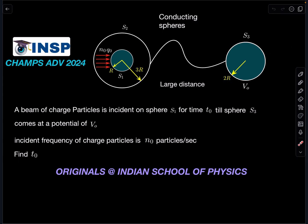A beam of charged particles is incident on sphere S1 for time t₀. Due to the process of electrostatic induction, sphere S3 is getting charged and finally its potential is given as V₀. The system is connected with a conducting wire. The incident frequency of charge particles is n₀ particles per second. Find t₀.